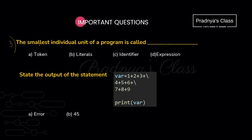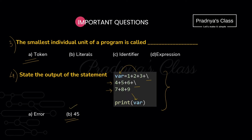Here is the third MCQ: the smallest individual unit of a program is called — and the correct option is token. The next question asks us to state the output of a statement. In this code, we are adding some numbers and initializing to a variable, but some numbers are written on a new line. If you want to continue across multiple lines, you need to end the previous line using backslash. This code is fine — if you omit the backslash you will get an error. When we print the value of the variable, we get 45, so B is the correct choice.